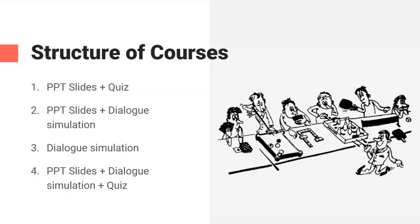The second structure is PowerPoint slides plus dialogue simulation. This includes skills courses where learners first read, watch a video, or listen to something, then practice in dialogue simulation. This structure is the best way to teach salespeople in retail companies, and also ideal for skills training. The third type is just dialogue simulation — perfect for practicing communication skills without any preparation.